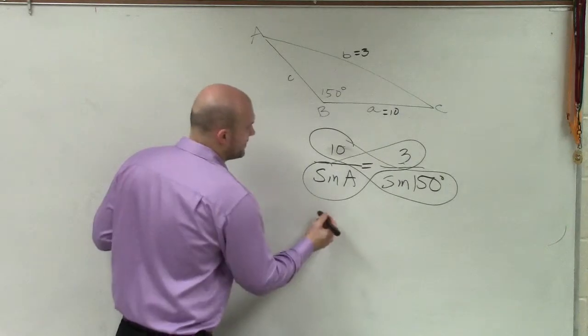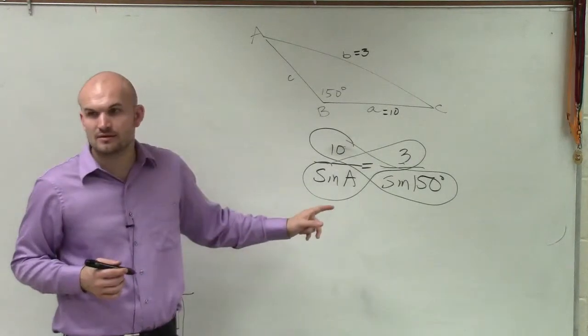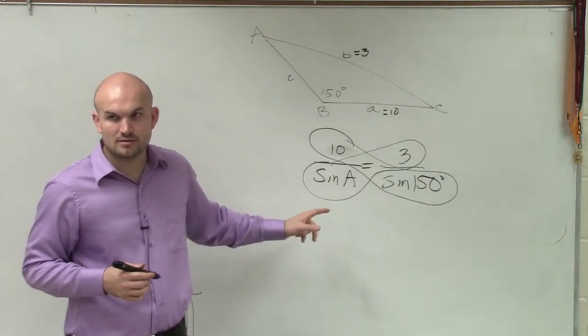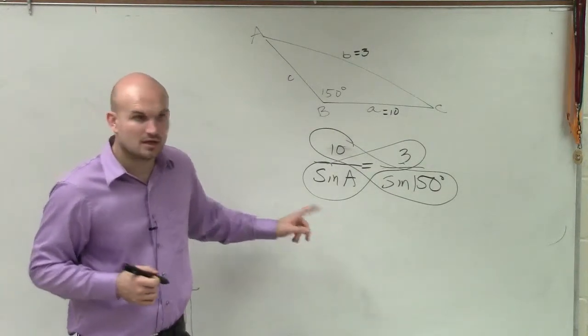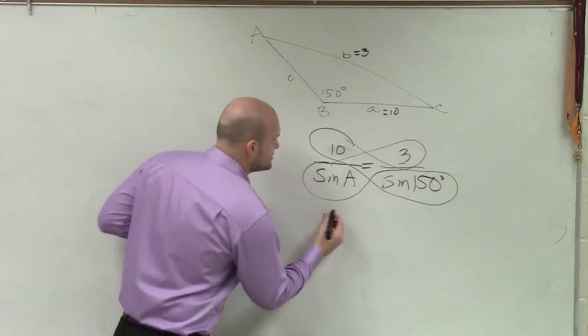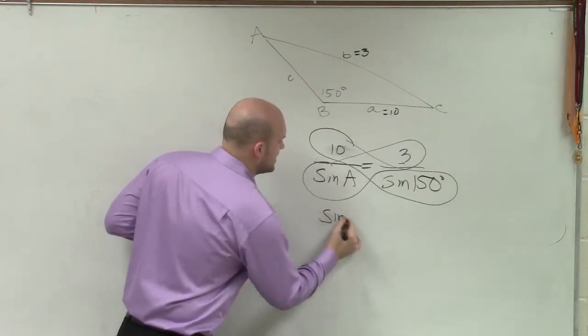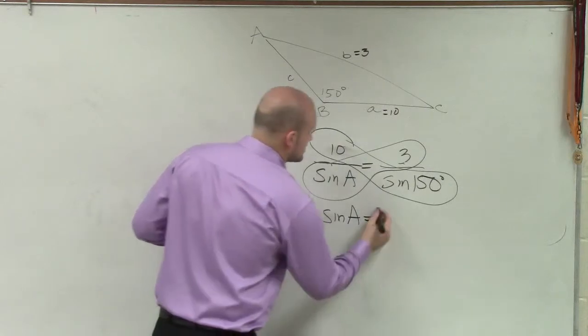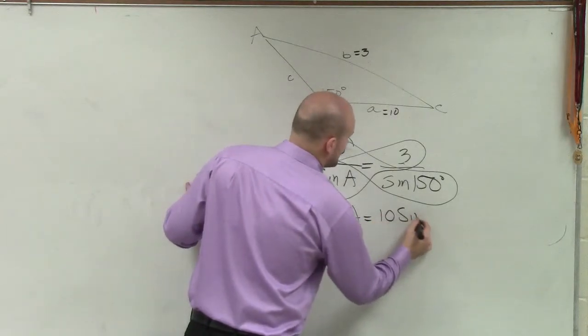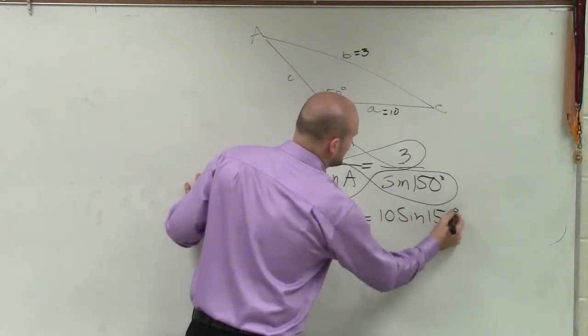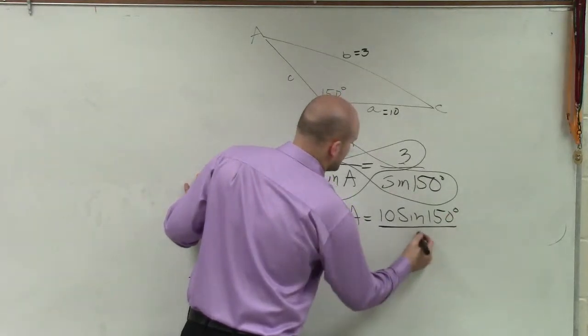So therefore, what I have, can I just solve for sine of A? I'll just solve for sine of A. So therefore, sine of A equals 10 times sine of 150 degrees divided by 3.